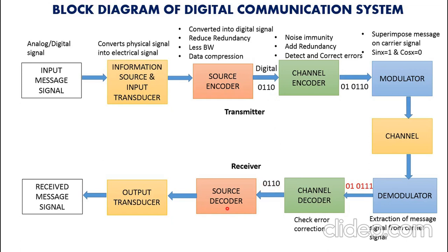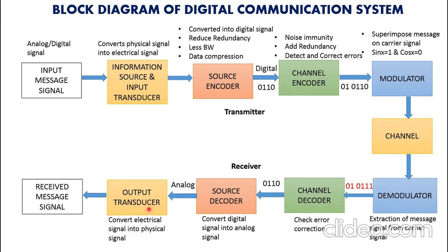Now the source decoder converts these digital bits into an analog signal. The signal is now analog and it goes to the output transducer. The output transducer converts this electrical signal into a physical signal. So when I convert the electrical signal into physical signal, I will receive the message which was sent by the sender — showing how the signal travels through all these blocks from transmitter to receiver.